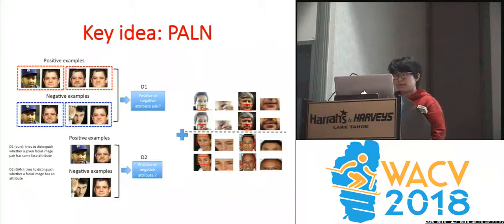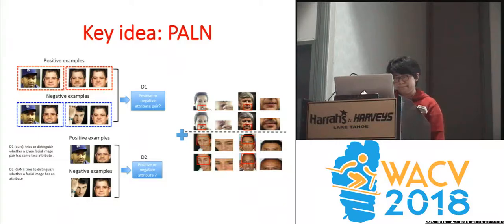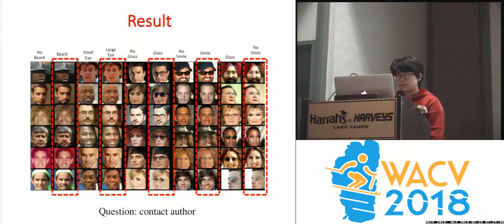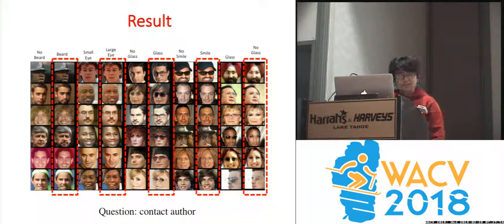The pairwise attribute loss function computes the distance between two input feature vectors. For instance, if we want to manipulate the attribute from no-beard to beard, we feed PARN with both positive and negative pairs and use the network to penalize the facial generator. To study the quality of generated results, we employ both qualitative and quantitative evaluation. We use synthetic data to help train an existing facial attribute detector, and significant gain has been achieved.